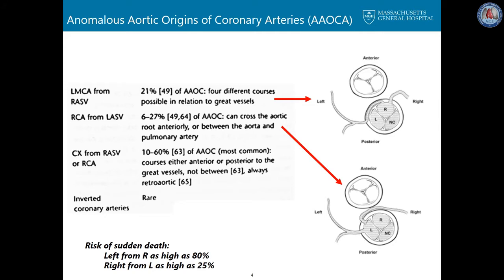Anomalous origin of the left coronary from the right sinus has long been recognized as a risk factor for sudden death. Sudden death can also occur when the right arises from the left sinus, but with much less frequency. The exact figures for the risk of sudden death are controversial, but there is agreement that the risk is higher with left coronary from the right sinus.